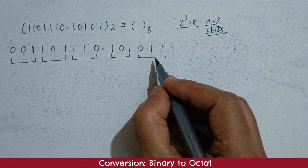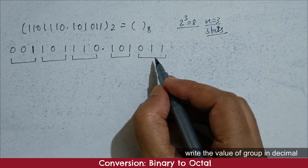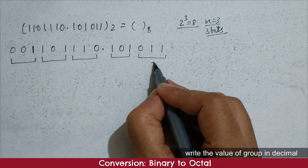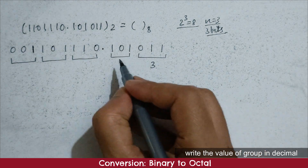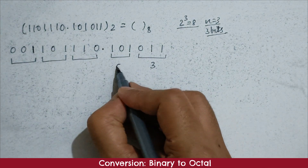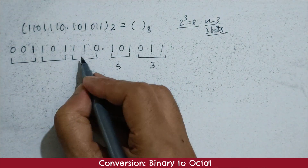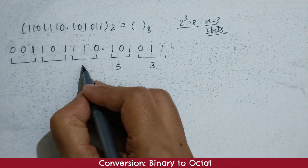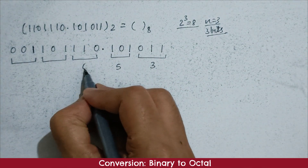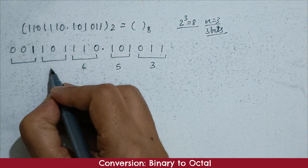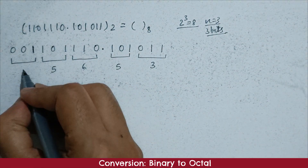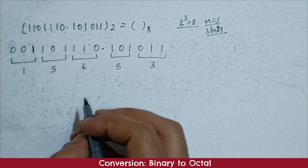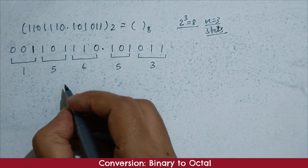Now write the value of the group bits, which is in binary, into decimal. This binary group's digit value in decimal will be 3, this group value will be 5. Before the point, this group value in decimal will be 6, this group value will be 5, and this group value will be 1.